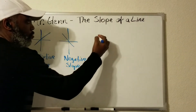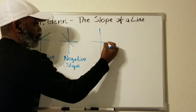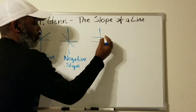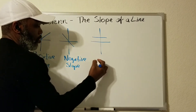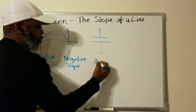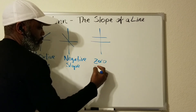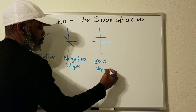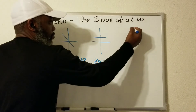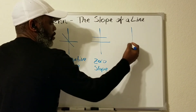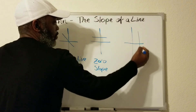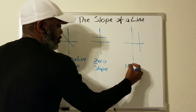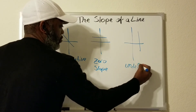Next, you have a horizontal line — we call that zero slope. Then last but not least, we have the undefined slope.